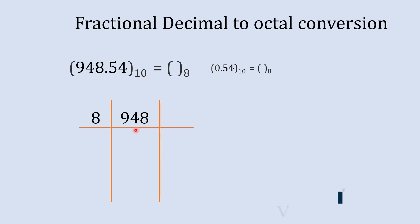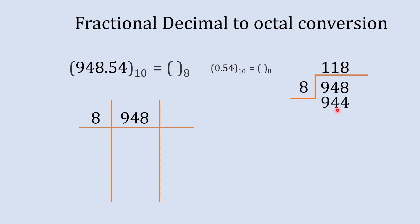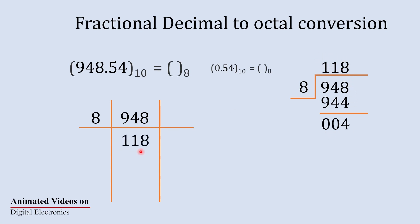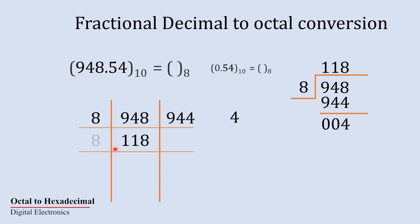Let's divide 948 by 8. So 118 eights are 944, and when we subtract we get remainder 4. So 118 is our quotient, and 4 is our remainder. We write the quotient and remainder accordingly. Then again we do the same process.